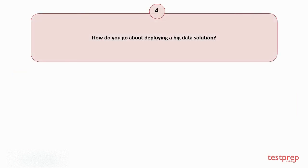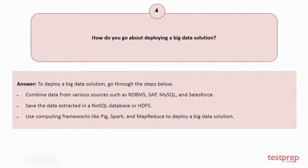Question number 4: How do you go about deploying a big data solution? Your answer is: To deploy a big data solution, go through the steps below. 1. Combine data from various sources such as RDBMS, SAP, MySQL, and Salesforce. 2. Save the data extracted in a NoSQL database or HDFS. 3. Use computing frameworks like Pig, Spark, and MapReduce to deploy a big data solution.